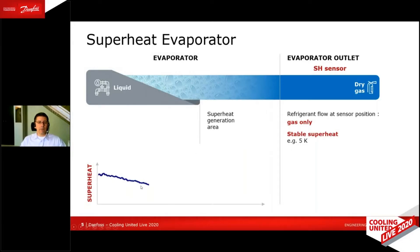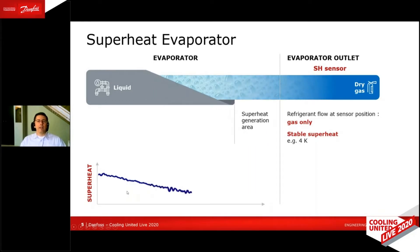Down there, the blue curve is a superheat measurement. Now we reduce the superheat. We see the superheat is going down. We still have enough superheat generation area here to produce dry gas. And this time, the gas leaves the evaporator with a superheat of, let's say, 4 Kelvin, as an example.